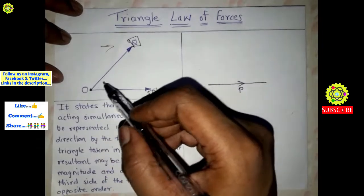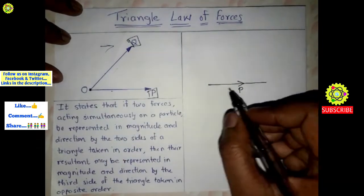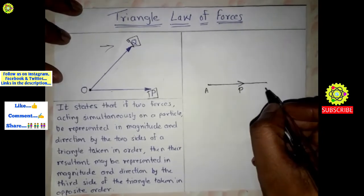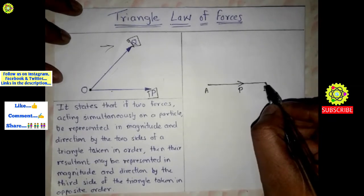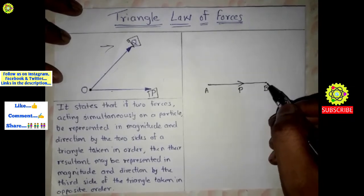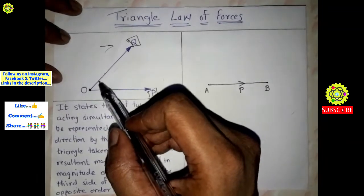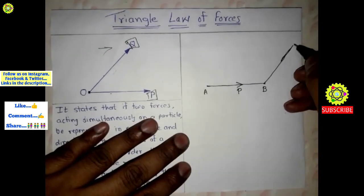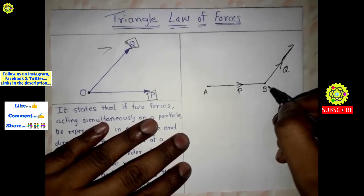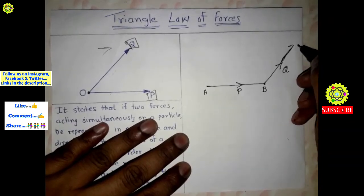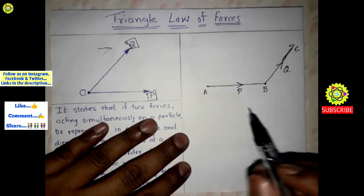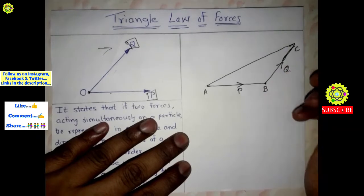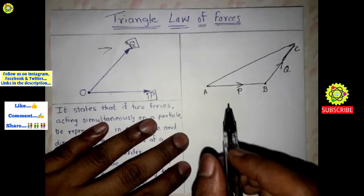We have drawn this line for force P. The starting point is A and the end point is B. From point B, we draw another line parallel to force Q. This is the Q force, with starting point B and end point C. We then join points A and C, forming triangle ABC.